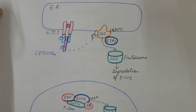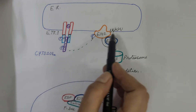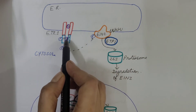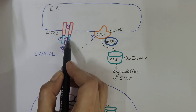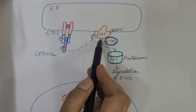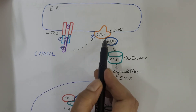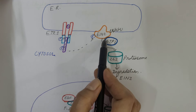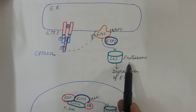Now let us understand this with the help of this diagram, showing the absence of ethylene. ETR1, which is the receptor, and EIN2 are present in the membrane of the endoplasmic reticulum. A copper ion is present. CTR1 comes and binds with the cytosolic domain of this receptor, leading to autophosphorylation of the histidine kinase of ETR1, which is followed by phosphorylation of CTR1. CTR1 then phosphorylates EIN2. This phosphorylation of EIN2 activates ETP1, which is the ligase. ETP1 comes and binds with EIN2, leading to polyubiquitination of EIN2, followed by proteasomal degradation of EIN2 by the 26S proteasome.